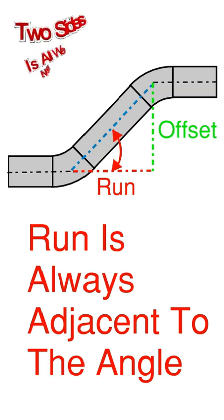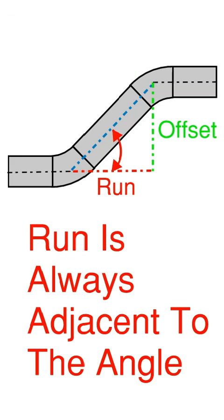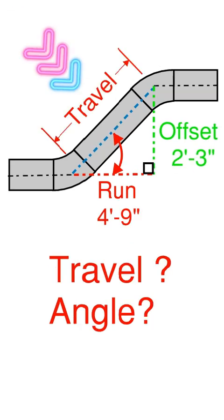So in this problem we know two sides, the offset and the run, and we don't know the angle of fitting and we don't know the travel. The travel is always the longest side of the triangle which would be opposite the perpendicular corner, and that's what we're looking to find, the travel, the center to center of those two fittings.